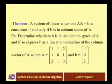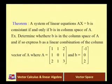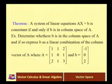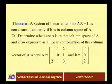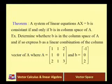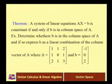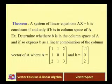A system of linear equations Ax = b is consistent if and only if b is in the column space of A. What is consistent? It means we can find a solution to the linear equations; otherwise it is inconsistent. So, determine whether b is in the column space of A, and if so, express b as a linear combination of the column vectors of A.